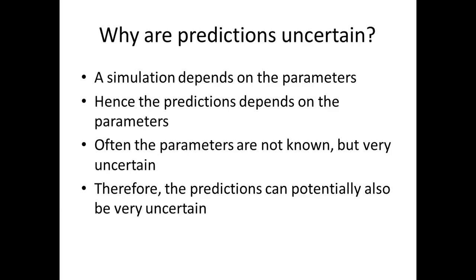Now there is a problem in systems biology, and this has to do with the parameters. Remember that parameters are the things in the model that have values — for instance, the rate constants or the initial conditions. If you put different values of these parameters, you get different simulations, and since a prediction is just a simulation of something you haven't measured, you also get different predictions. Because the parameters are unknown and uncertain, the predictions will typically also be very uncertain.